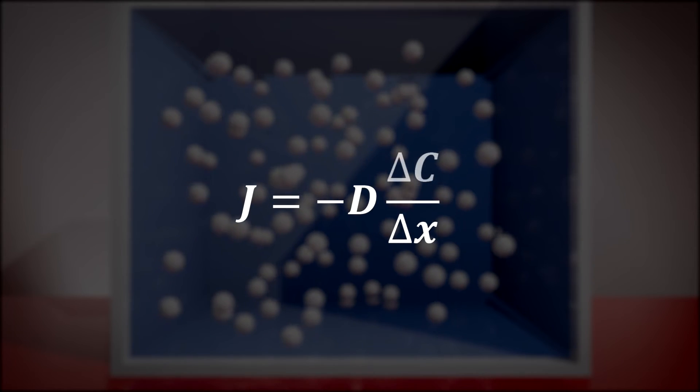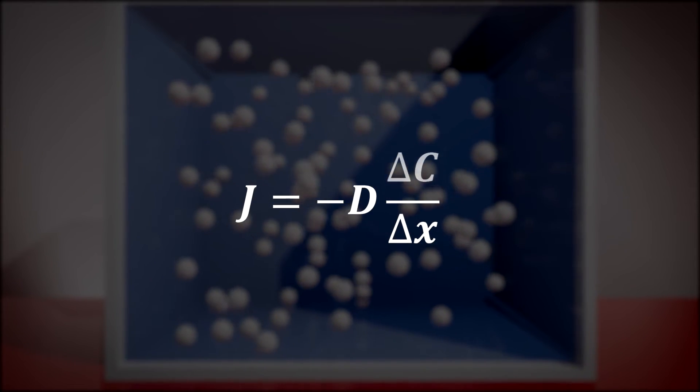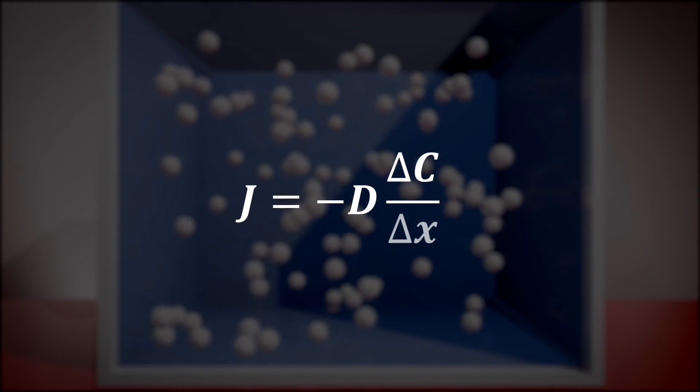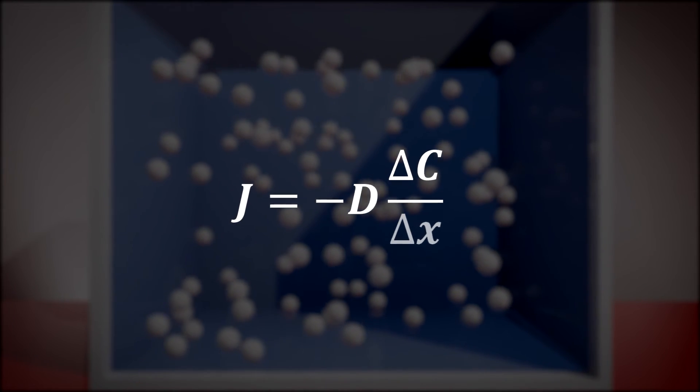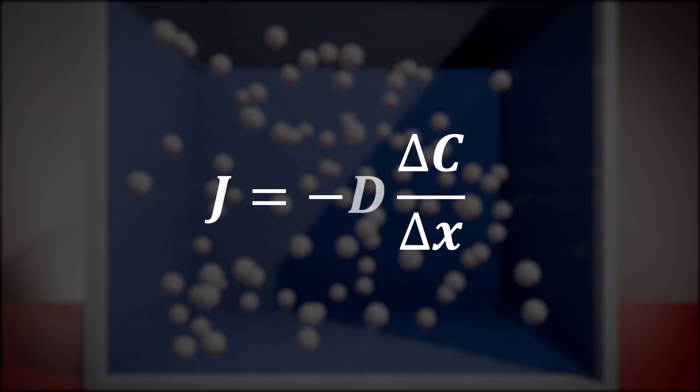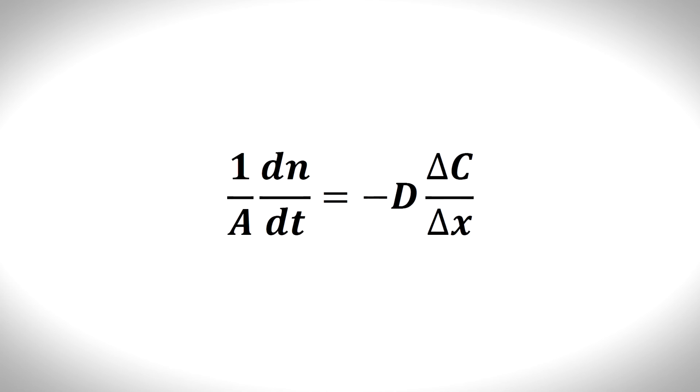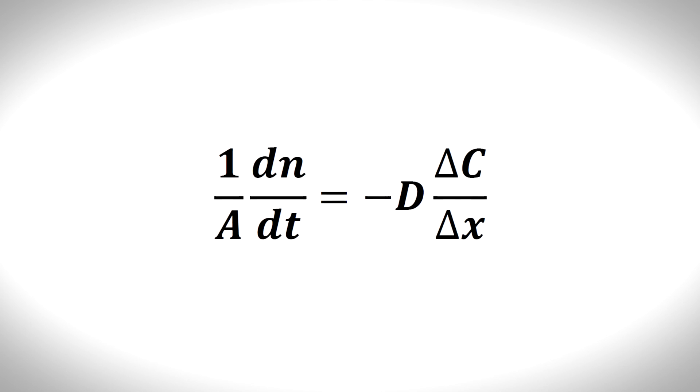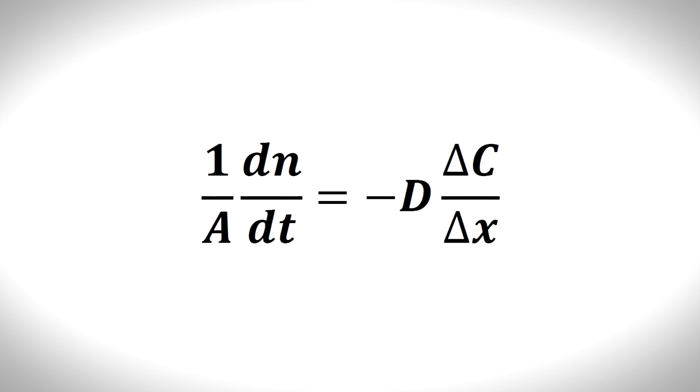The flux will depend on the difference in concentration, delta C, the separation between the two regions, delta X, and the mobility of the molecules as given by the diffusion coefficient, d. If we can determine the flux of molecules and we know the total area of the cell, then we can find the total rate of flow of molecules into the cell.